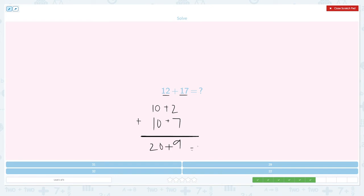20 plus 9 equals 29. So the answer is not 31, not 32, not 22. There it is. 29.